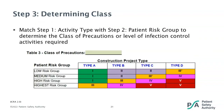Step three is determining the class of precautions needed for the project. In this step, we put together the information on the construction project type — found at the top — and then combine that with the risk group determined down the left-hand side. This determination will guide us on the mitigation strategies that need to be taken on the project from start to finish. The class of precautions goes from class one to class five. Class five was added with the new tool updates to add more precise precautions when looking at medium to high-risk projects.